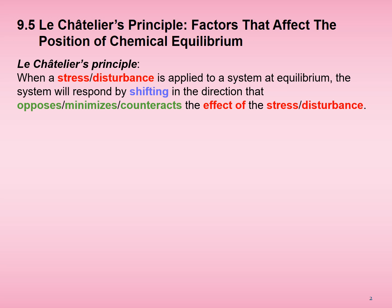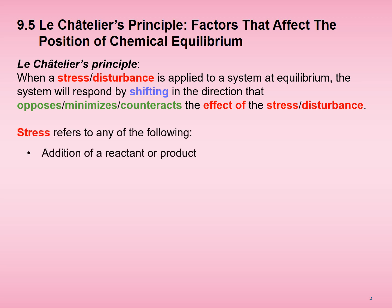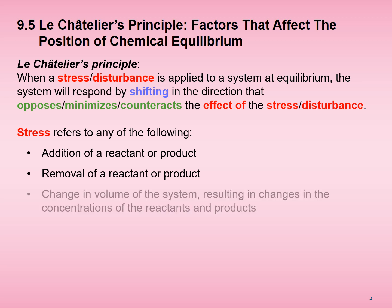But what does it mean to stress or disturb a chemical system? Stress or disturbance could be adding a reactant or product, removing a reactant or product, changing the volume of the system by increasing or decreasing it — which in turn changes concentrations of the reactants and products — or changing the temperature by increasing or decreasing it.